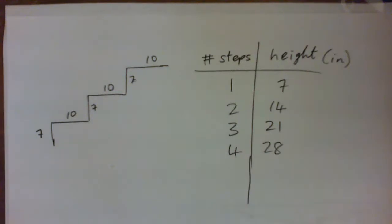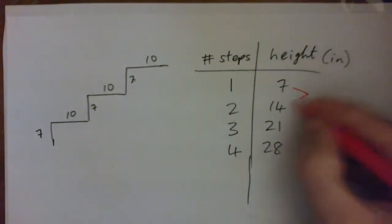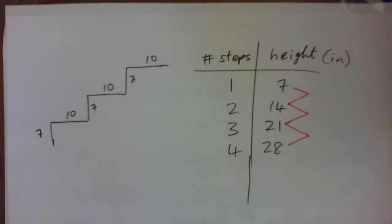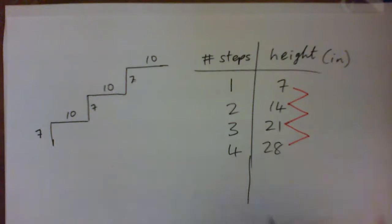Now you guys' stairs at home might be different, but each step, unless you're living in a crooked house. There was an old crooked man and he lived in a crooked house. I don't know if that was a nursery rhyme or something. But yeah, your stairs should be linear.